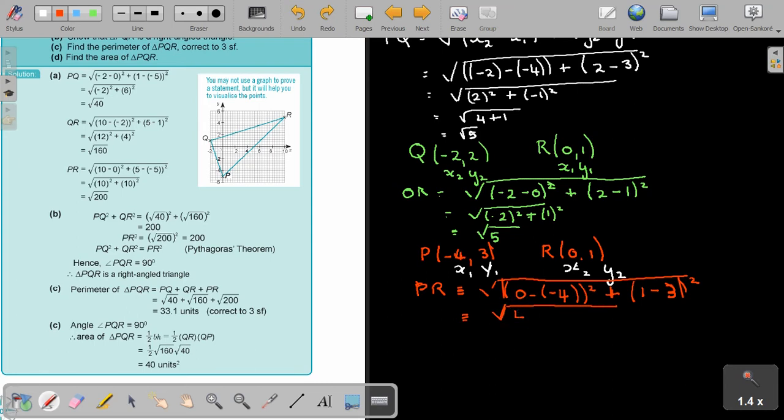So this will be 4 squared plus negative. And that will give me a final answer of 16 plus 4. And that will give me an answer of 20.